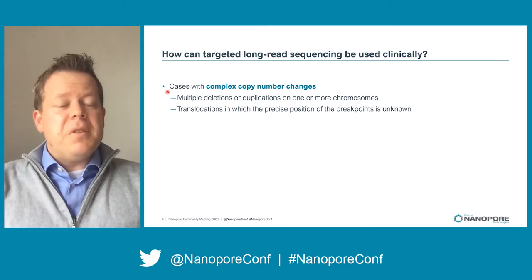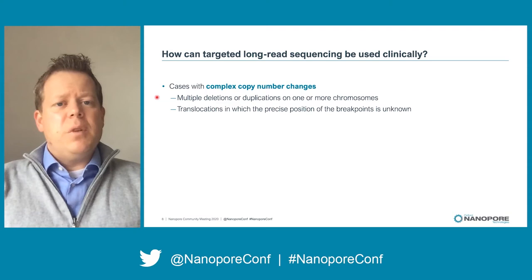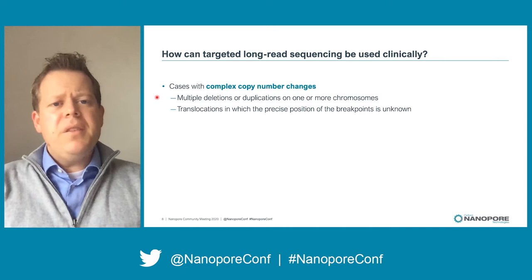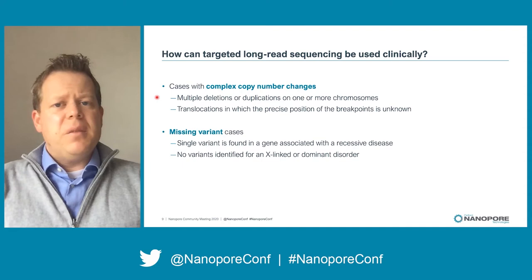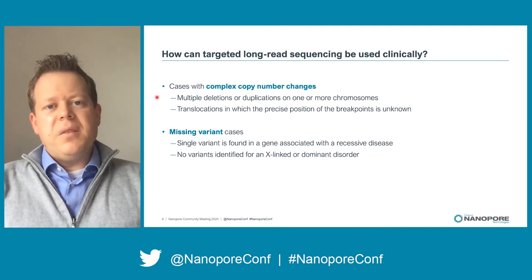That's a really big question, so to address it we started with a couple of smaller ones. Specifically, we wanted to see how targeted long read sequencing might be used in clinical genetics today, and we saw two opportunities. First, we wanted to know if targeted long read sequencing could provide additional clarity in cases with a complex structural change, which we sometimes see on a microarray or karyotype — cases where we see more than one deletion or duplication on an array or a complex rearrangement on karyotype. We were also interested in missing variant cases, where a typical workup revealed a single variant in a gene associated with a recessive disease, or no variant in a suspected dominant or X-linked disorder.